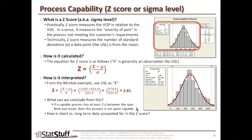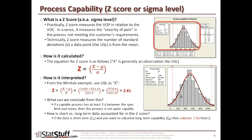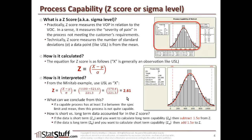How do short-term and long-term come into play with the z-score? If the data used to run this process capability was short-term (ZST) and you want to calculate the long-term capability, subtract 1.5 standard deviations from Z. So 2.61 minus 1.5 gives 1.11 for Z over the long-term. Conversely, if the data was long-term and you want the short-term capability, add 1.5 standard deviations. So 2.61 plus 1.5 gives 4.11. From this, we derive the equation: Z long-term equals Z short-term minus the Z shift, where the Z shift is represented as 1.5 standard deviations.